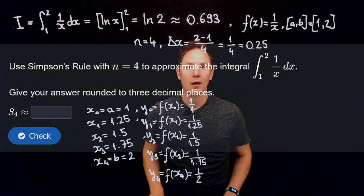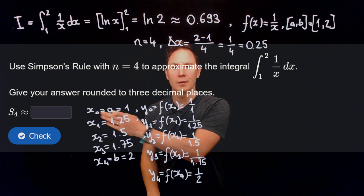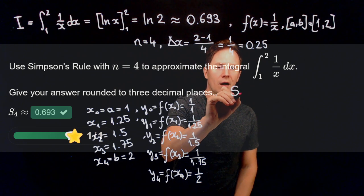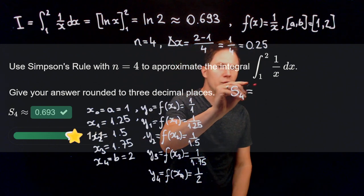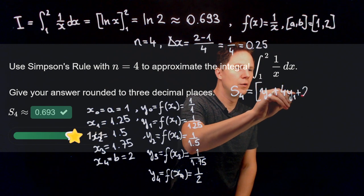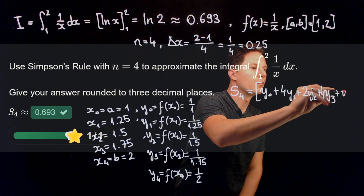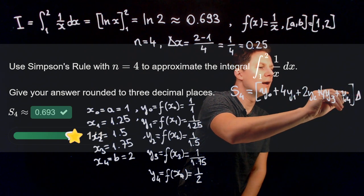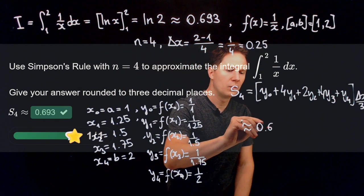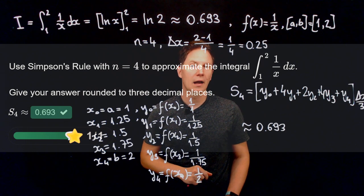Finally, use Simpson's rule with n equals 4. For Simpson's rule using parabolic arcs, the formula tells us to take y0 plus 4 times y1 plus 2 times y2 plus 4 times y3 plus y4, all multiplied by delta x over 3. This expression, when computed, gives us 0.693, which to three decimal places is the best approximation to ln(2) so far. I hope you enjoyed this video and I'll see you in the next one.